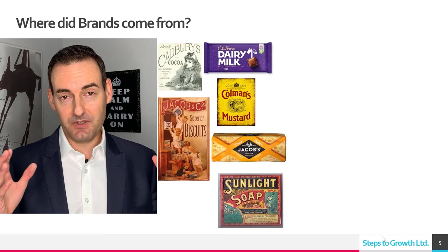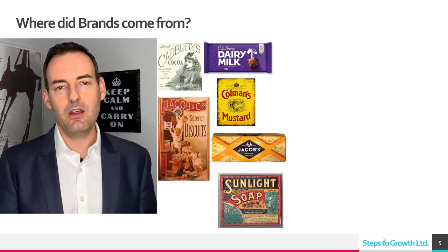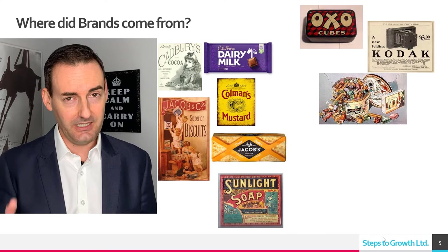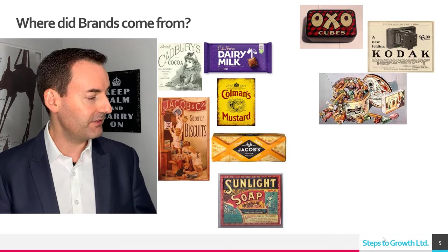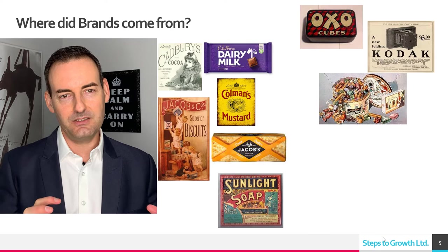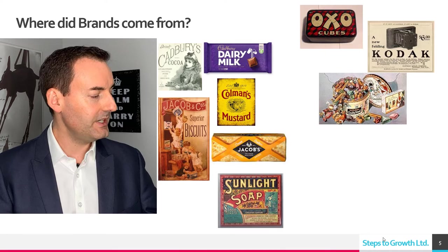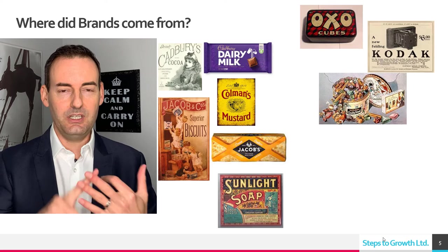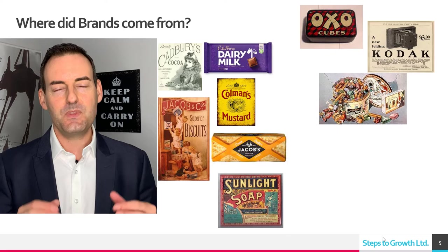Over time, as the market developed further, people needed to differentiate even more. This is where made-up names essentially came along — things like OXO cubes, or Kodak, a made-up name for a camera company to stand out, and easier to trademark than 'Mr. Smith's Cameras.' Then you go into packaging — for example, Quality Street — using innovative packaging colors with your name to stand out on a shelf. Ultimately, good branding came down to a unique name, a unique color you owned, and ideally unique packaging.